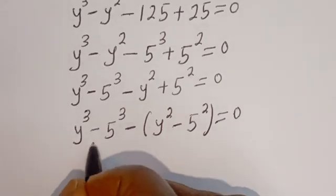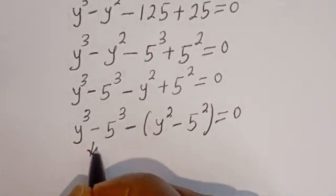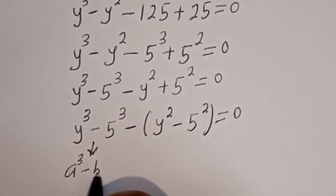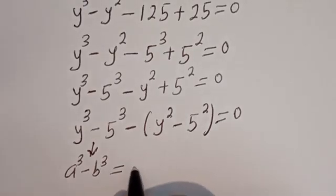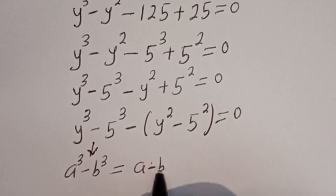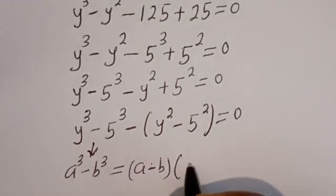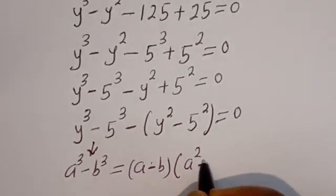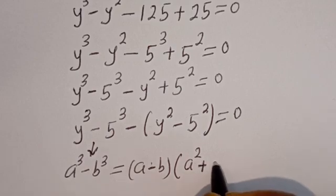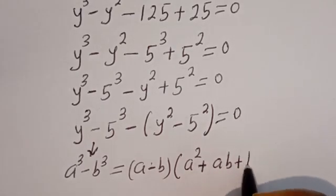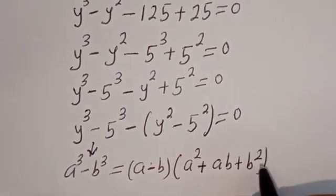Take note that from the difference of cubes identity: A to the power of three minus B to the power of three equals A minus B, bracket A squared plus AB plus B squared.